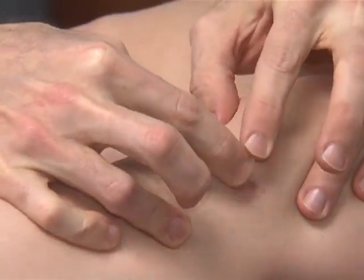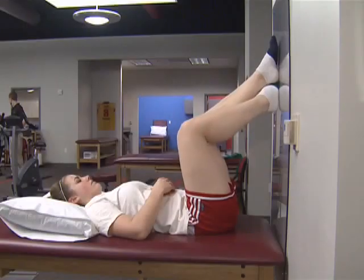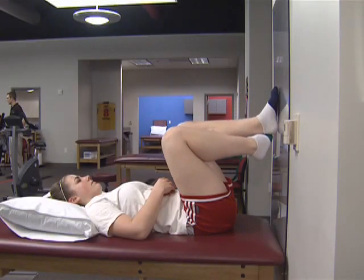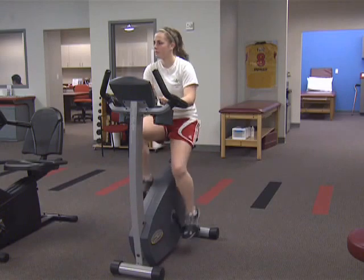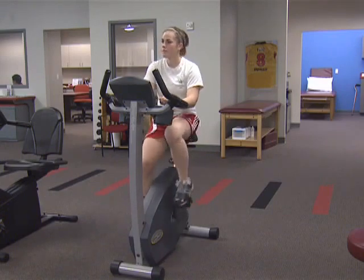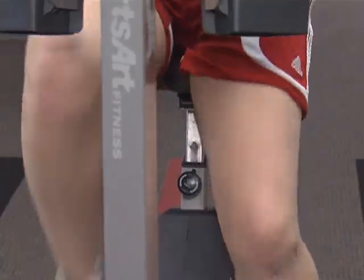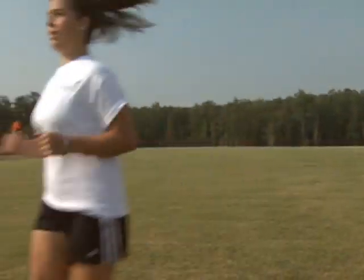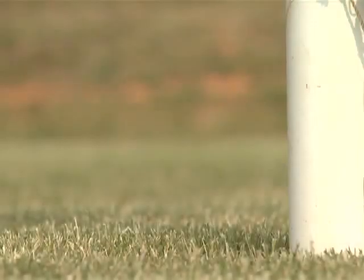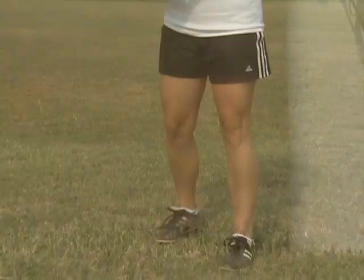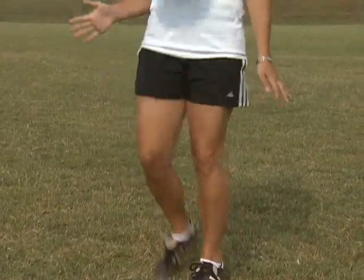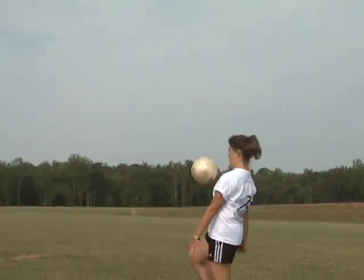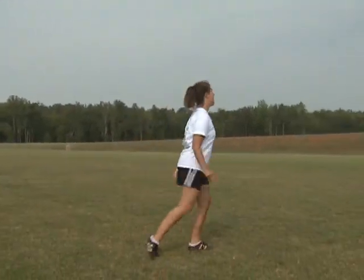The rehab is a crucial component of the treatment for optimal outcome. Initially, this involves improving motion, reducing swelling, and restoring normal walking. This progresses to endurance strengthening such as exercise bike riding. Jogging or striding can begin by three months. Full sports are usually allowed by five to six months, depending on progress in therapy, including strength, balance, and training.